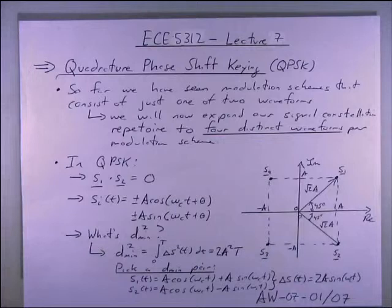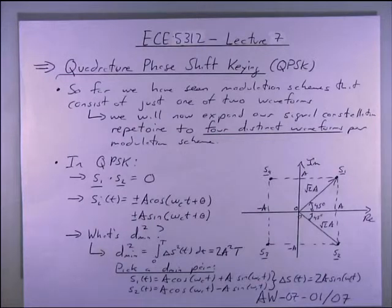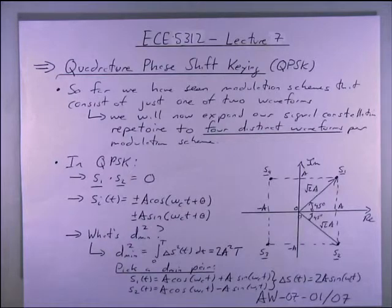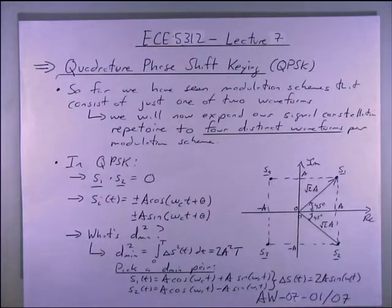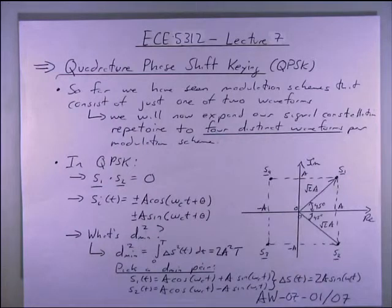Welcome to Lecture 7 of ECE 5312. In today's lecture we're going to look at several different types of modulation schemes. We're going to look at QPSK, 16QAM, and M-ary PAM. QPSK stands for quadrature phase shift keying, where information about binary patterns is contained in the phase of analog signal waveforms. In 16QAM, 16 quadrature amplitude modulation, we use a combination of amplitude and phase to encode digital information. Lastly, M-ary PAM, or pulse amplitude modulation, builds upon binary PAM from the last lecture, using different amplitude levels each representing a different binary pattern.